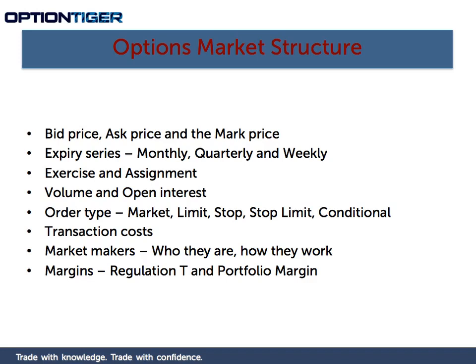Portfolio margin is a much more advanced margin type. You typically have to pass an exam — brokers like Think or Swim require this before allocating portfolio margin. There are also minimum account requirements: some brokers require $100,000 and others $125,000. Not all brokers offer portfolio margin, so if you think you might want it in the future, it's worth checking upfront whether your broker has it. Think or Swim and Trade King are among those that do offer it.